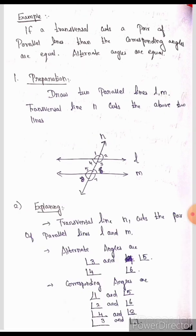Step 2: Explaining. The transversal line N cuts the pair of lines L and M. The transversal line cuts the two parallel lines.